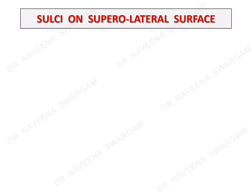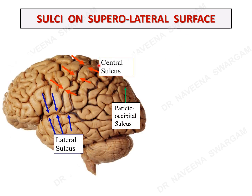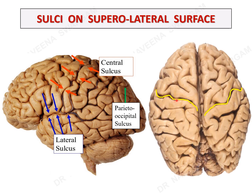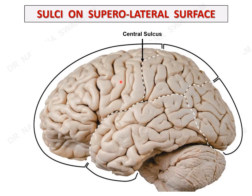Let's see the sulci and gyri on the superolateral surface. There are three sulci prominently visible on the superolateral surface separating the lobes: the central sulcus, the posterior ramus of the lateral sulcus, and the parieto-occipital sulcus. The central sulcus enters onto the medial surface by cutting through the superior border behind its midpoint, whereas the parieto-occipital sulcus enters onto the superolateral surface by cutting through the superior border close to the occipital pole. Both sulci are easily traceable from the superior border onto the superolateral surface.